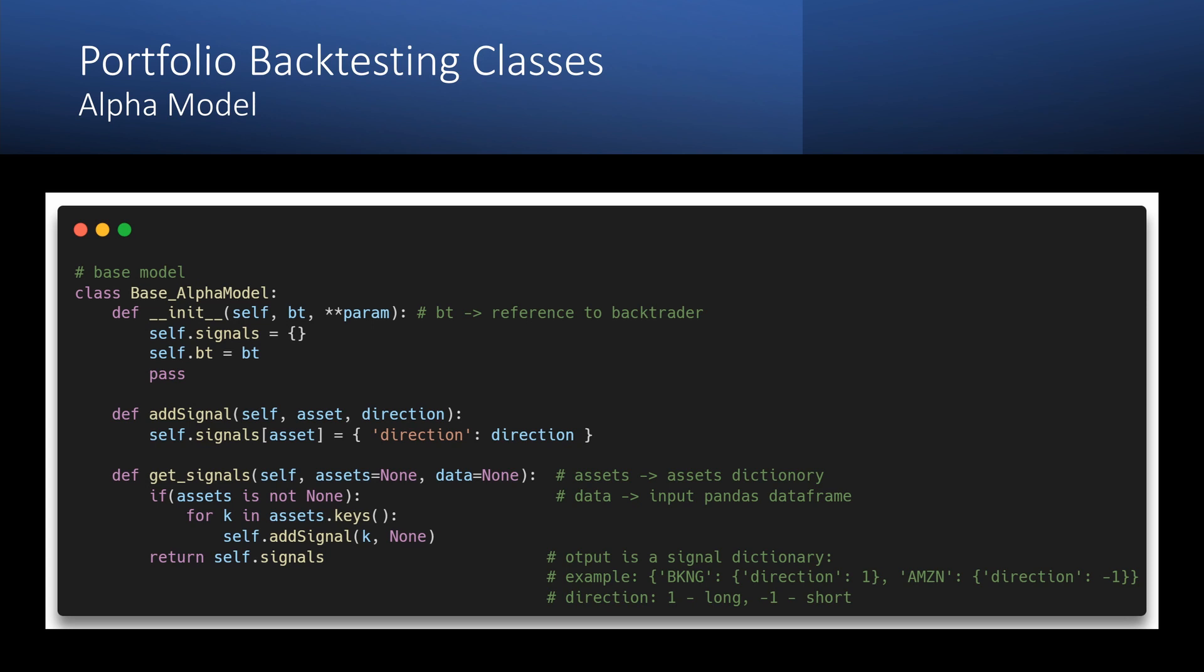We use this dictionary as input to the alpha model, which generates a dictionary with the signals. The key is the asset and the value is the direction.